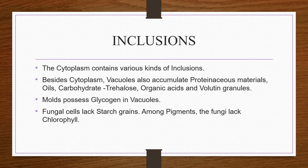Inclusions. Inclusions are inclusion bodies found in the cytoplasm. The cytoplasm contains various kinds of inclusions. Vacuoles also accumulate proteinous materials such as carotenoid pigments, oils, carbohydrates, amino acids, and organic acids. Molds contain glycogen in their vacuoles. Fungal cells lack starch grains, and among pigments, fungi also lack chlorophyll.